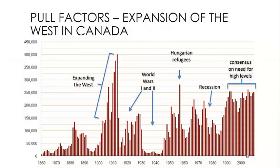To look at this in more detail, we can examine examples of pull factors and push factors. We'll start with a historical example of pull factors by looking at the expansion of the West in Canada. This graph is showing immigration rates in Canada throughout its history. As you can see, it's not been consistent — there have been periods of very high immigration and periods of very low immigration, and everywhere in between. There are ebbs and flows to this graph.